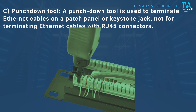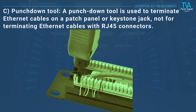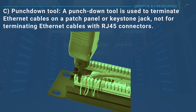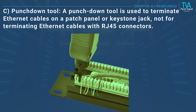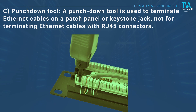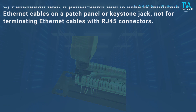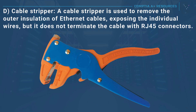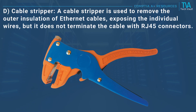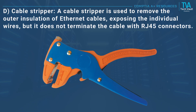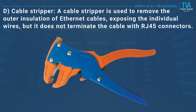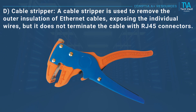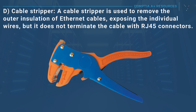C, punchdown tool: a punchdown tool is used to terminate Ethernet cables on a patch panel or keystone jack, not for terminating Ethernet cables with RJ45 connectors. D, cable stripper: a cable stripper is used to remove the outer insulation of Ethernet cables, exposing the individual wires, but it does not terminate the cable with RJ45 connectors.